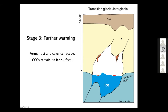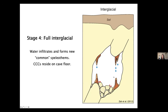Further warming continues as we move into a warmer interglacial interval. Ice persists in the cave and CCCs just sit on top of the ice. Eventually we hit an interglacial period like the one we live in today — water can infiltrate into the cave, it becomes hydrologically active again, and stalagmites and stalactites start forming again. Of course, we're only talking about limestone caves here; Washington has other types of caves, but this process is specific to limestone.